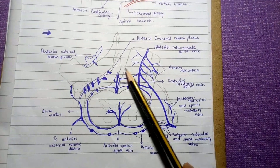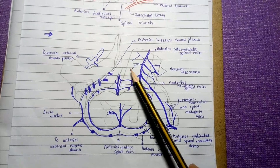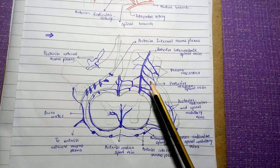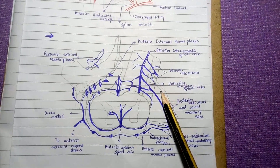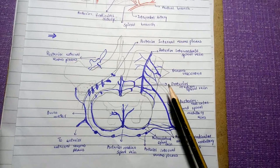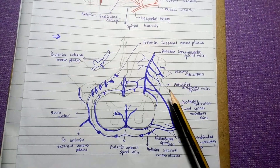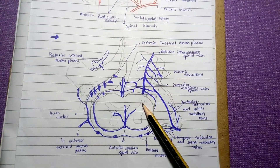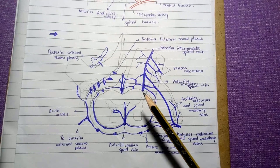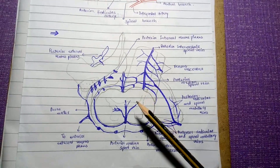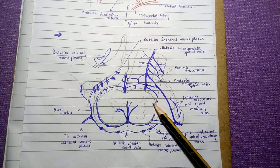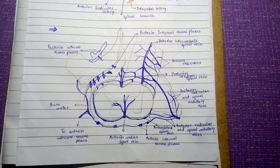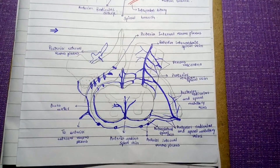Besides these six tortuous longitudinal venous channels, there are other small venous vessels that also drain venous blood from the spinal cord. This is all about the blood supply of the spinal cord. Thank you very much.